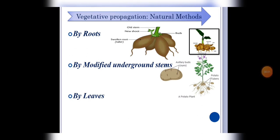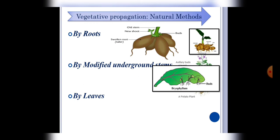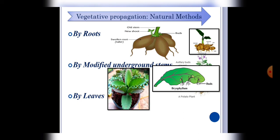Next, by leaves. Students, there are some plants whose leaves can also reproduce. For example, bryophyllum, which has some bud-like structures that develop into plants when placed in soil.